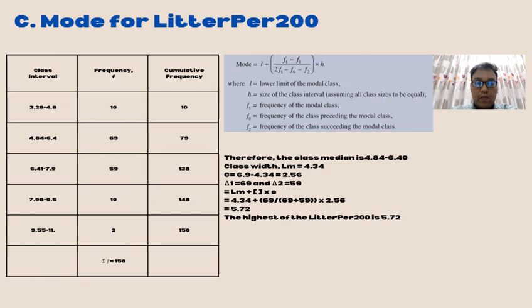For the mode calculation, we use the median class 4.84 until 6.40. The class with lower boundary is 4.34. The class is 6.9 minus 4.34, we get 2.56. So the answer for the mode, the highest of liter per 200, is 5.72.